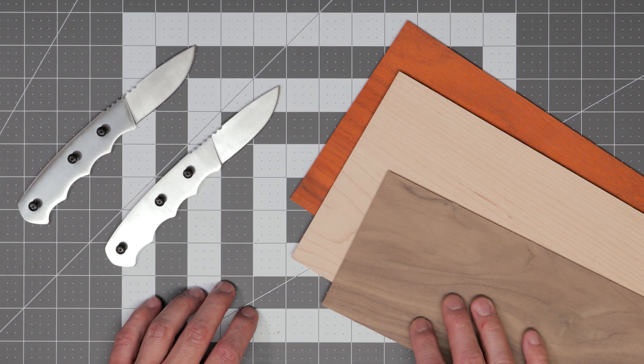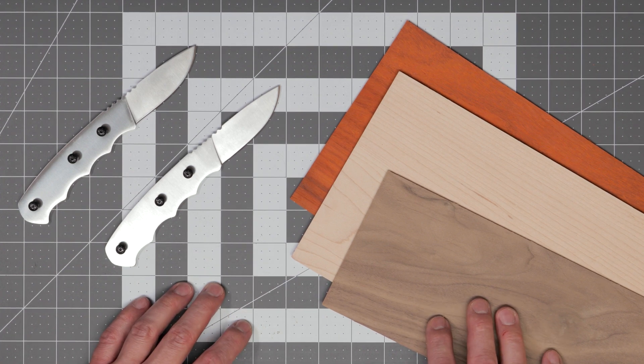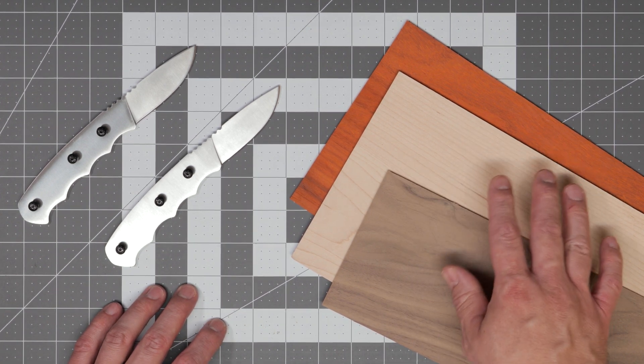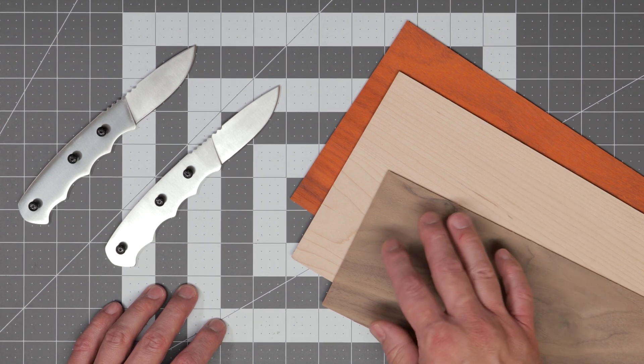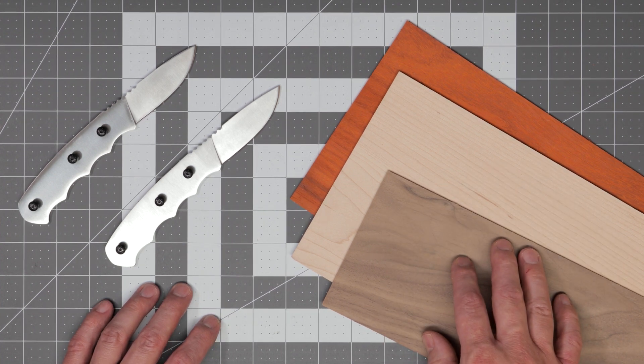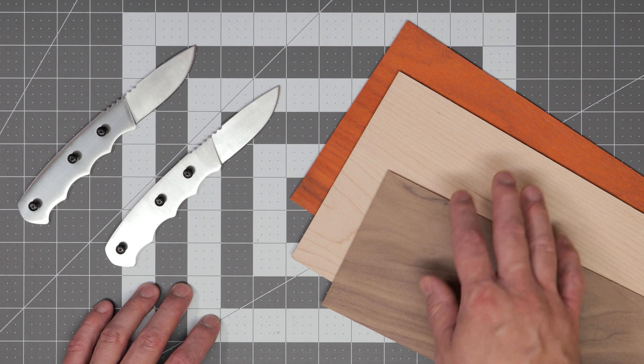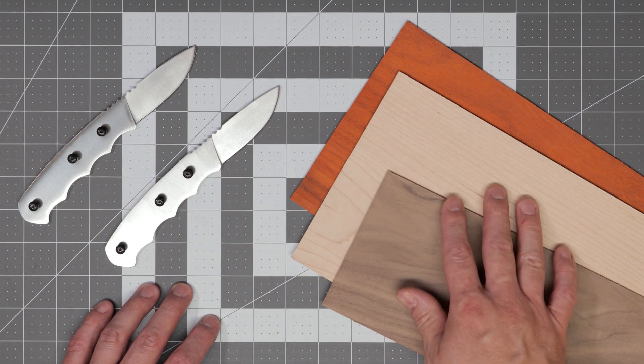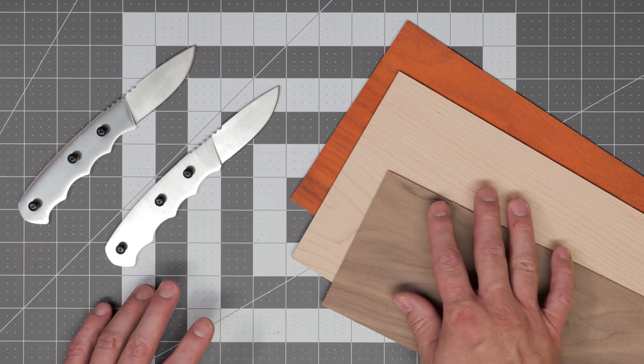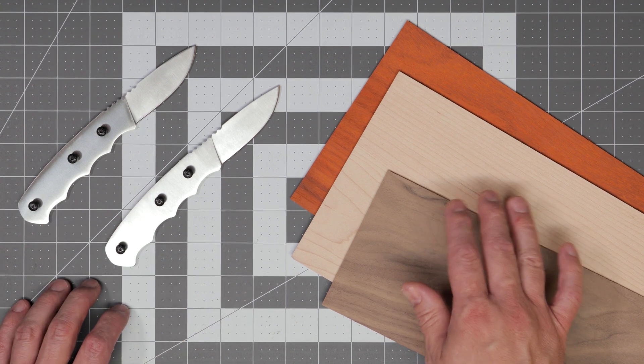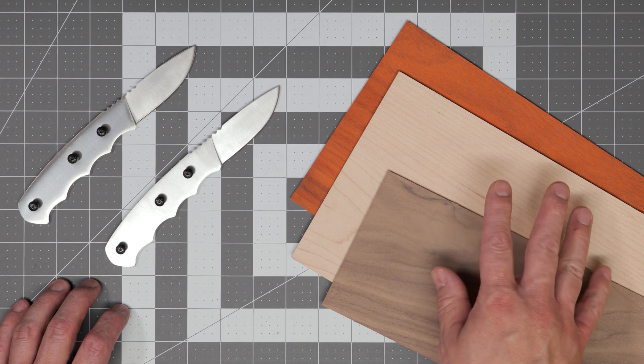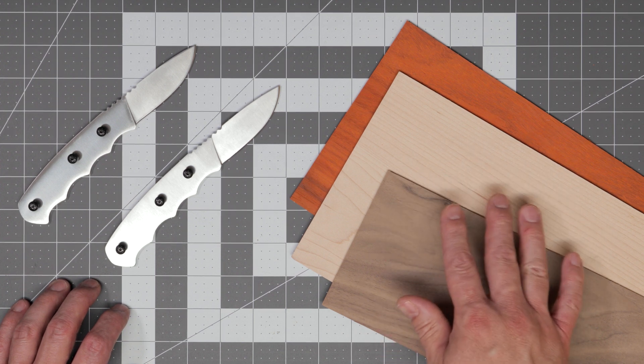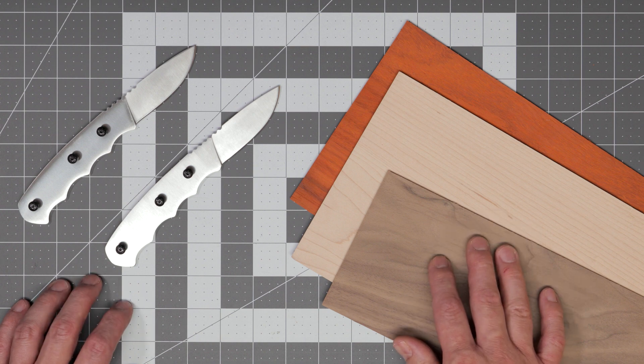You'll also need some hardwood thins. The ones I'm using are one-eighth of an inch thick, but you can use quarter inch thins if you want a thicker handle. For this project I'll be using walnut, maple, and padauk woods. Most hardwoods will work for this project so feel free to experiment. And as always, I'll have links to all the material used in this project in my blog post which will be linked in the description below.